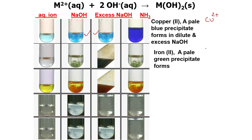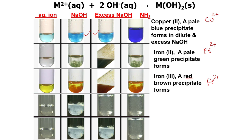Iron can form two cations: Fe2+ and Fe3+. Iron 2+ (Fe2+) forms a pale green precipitate with NaOH — whether dilute, excess, or with NH3 — it always produces a pale green precipitate. For Fe3+, it produces a red-brown precipitate. Memorize the difference between Fe2+ (pale green) and Fe3+ (red-brown).